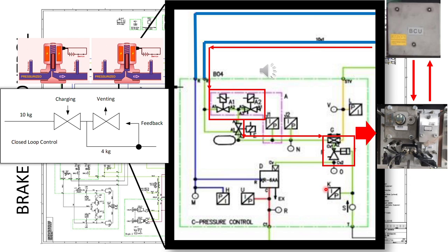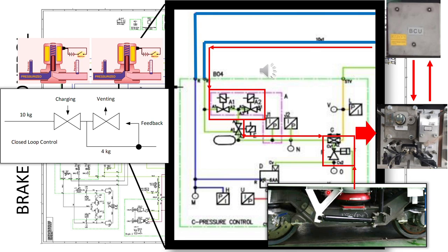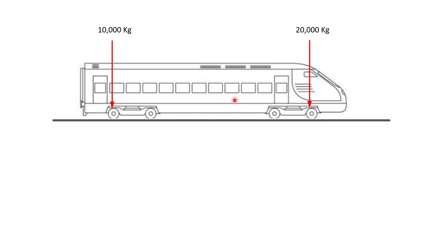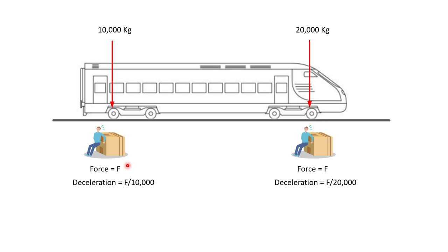There is another component: the pressure coming from the air springs. A differential valve uses both the demanded pressure and the pressure from the air springs. This is for load compensation. If a train is unevenly loaded — say 10,000 kg on one wheel and 20,000 kg on another — and the same force is applied to both, the deceleration will differ: the lighter wheel decelerates faster, meaning one wheel takes most of the retardation force.